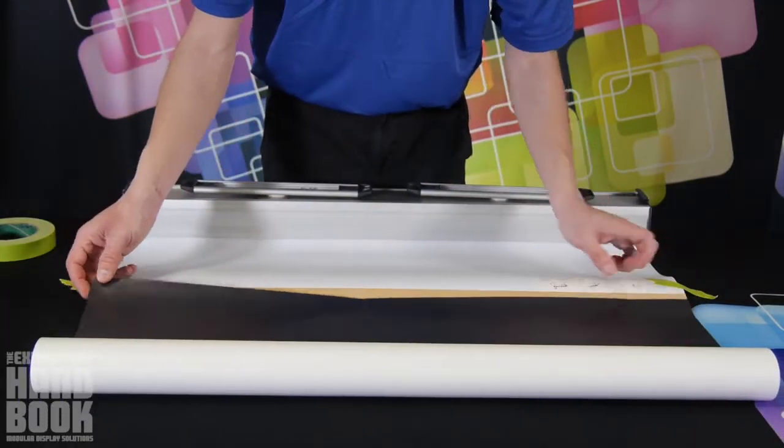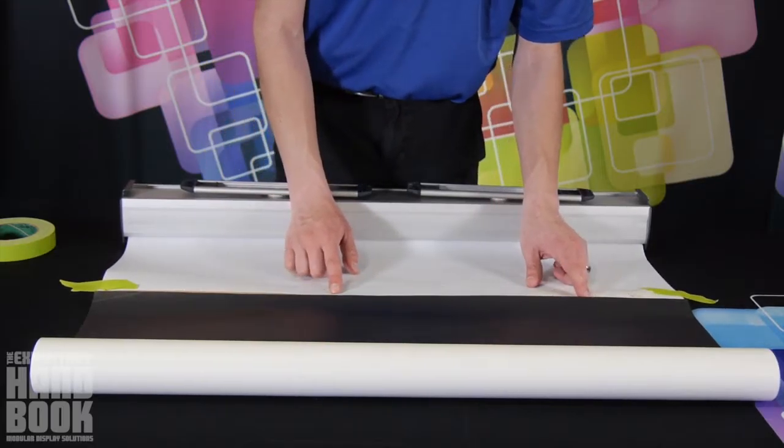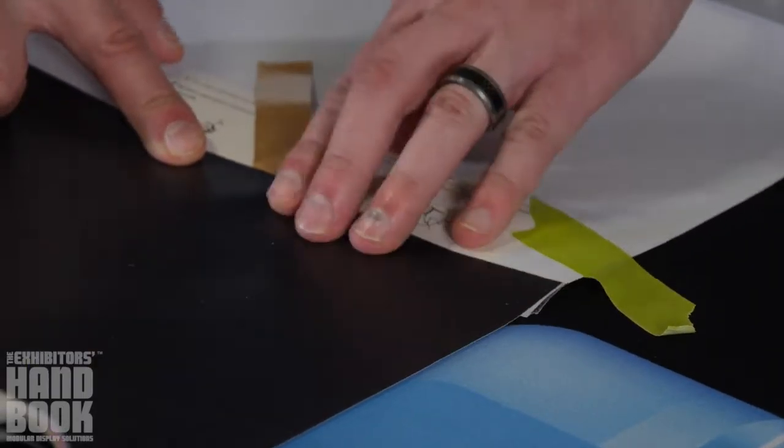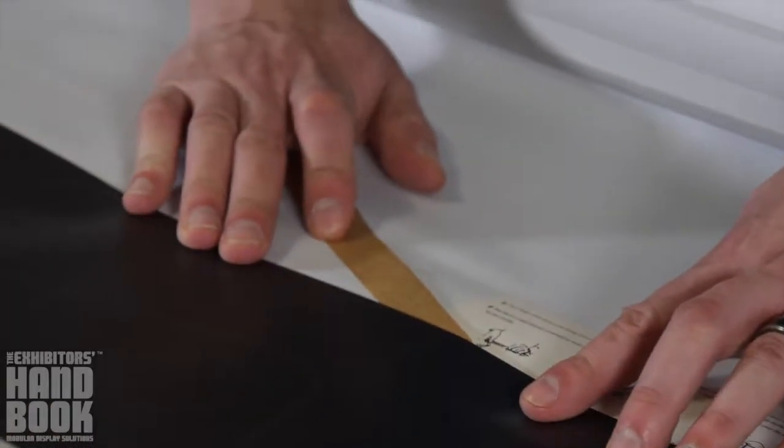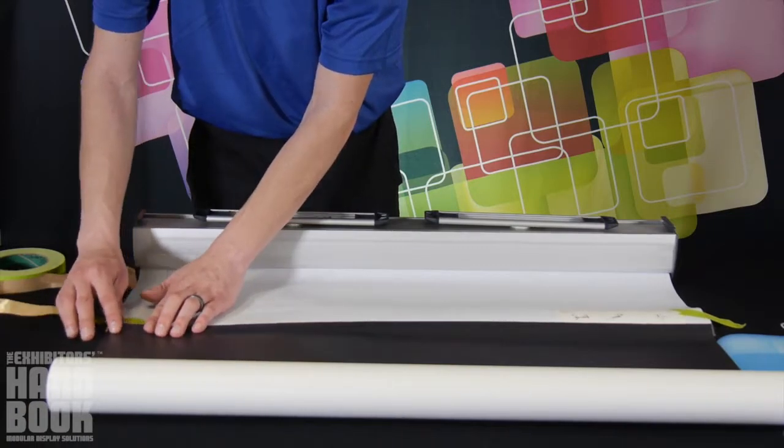Align the graphic up with the edge of the leader strip facing up. Peel back the protective coating while continuously applying pressure to both the graphic and leader strip, smoothing as you go along.